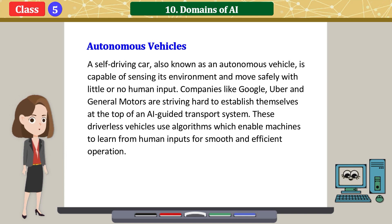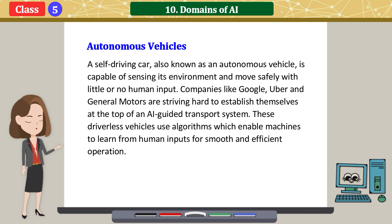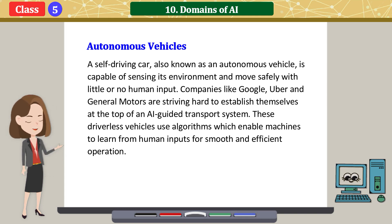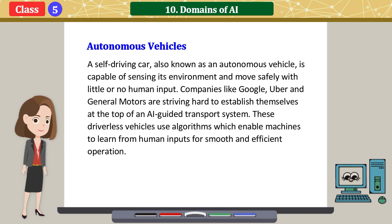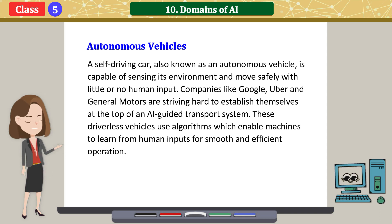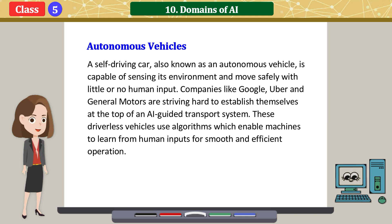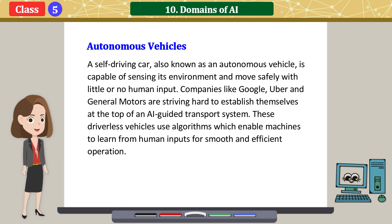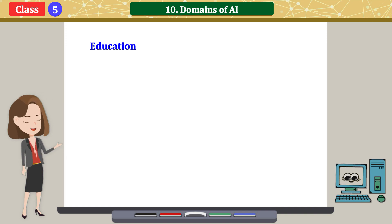Companies like Google, Uber, and General Motors are striving hard to establish themselves at the top of an AI-guided transport system. These driverless vehicles use algorithms which enable machines to learn from human inputs for smooth and efficient operation.